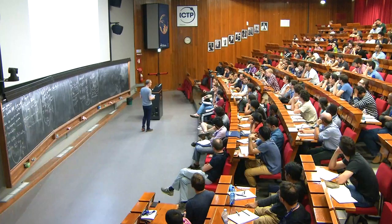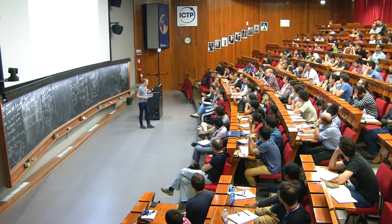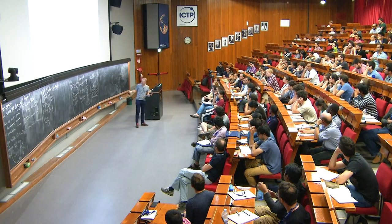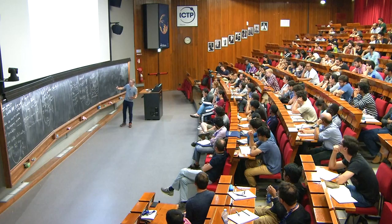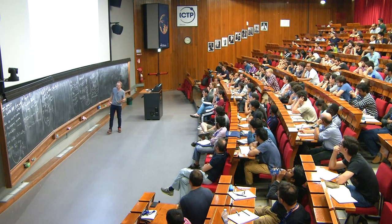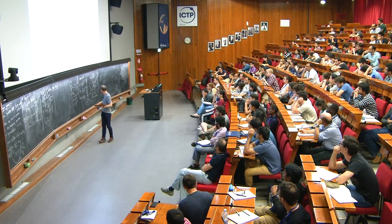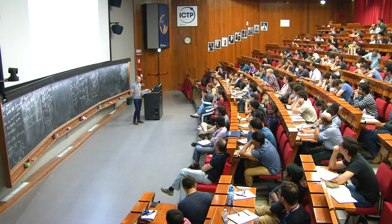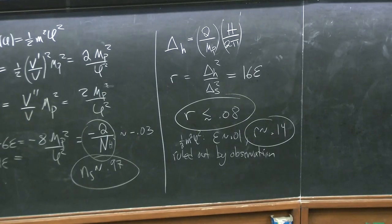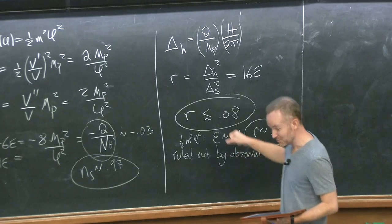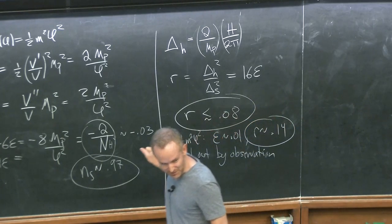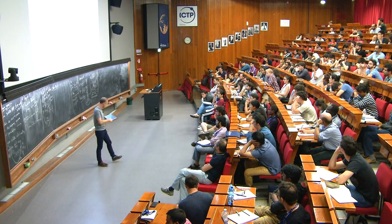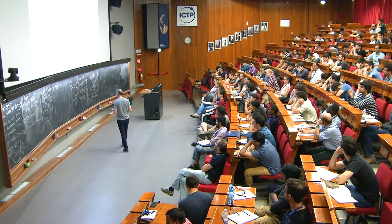Quick question: is φ super-Planckian related to R? Yes, there's something called the Lyth bound which directly relates the range of φ to R. But this value of R doesn't yet tell you that the range of φ is sub-Planckian. You also have to be careful whether you're talking about the reduced Planck mass or the Planck mass. It doesn't tell you that the range of φ is below the reduced Planck mass — it's a question of order-one factors.